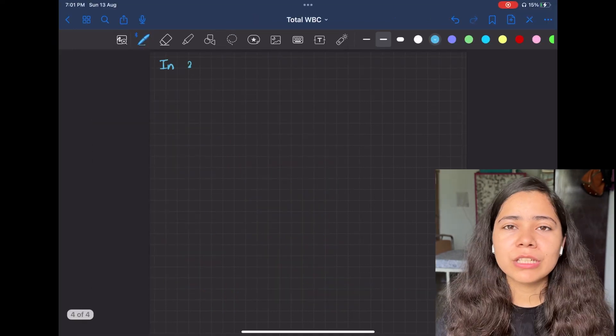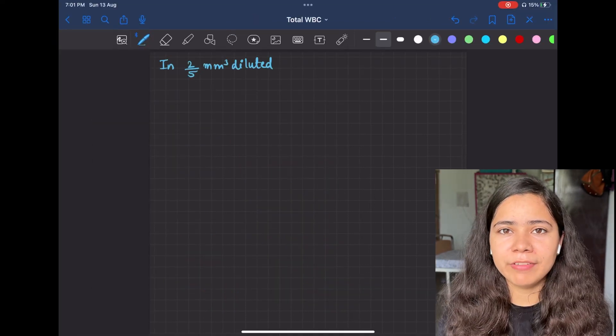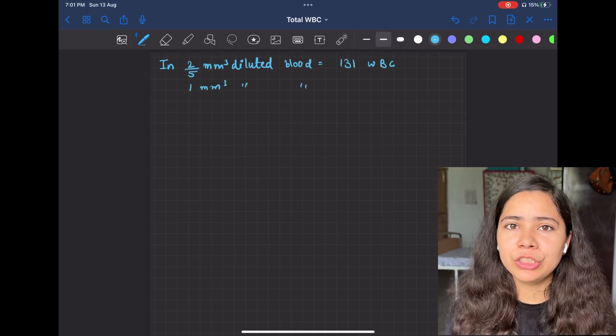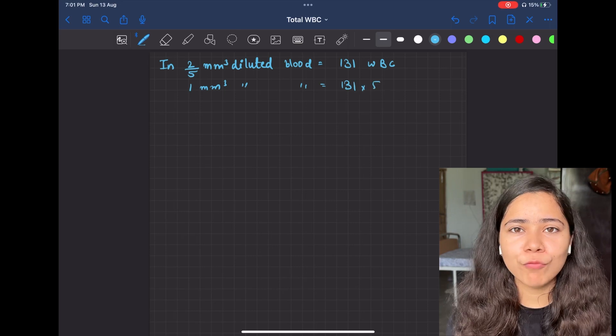So in 2/5 mm³ we have 131 WBC. By unitary method, in 1 mm³ we have 131 × 5/2 WBC. These are the WBC present in our diluted blood, but we want to know the number of WBC in normal blood.